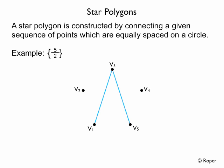Then we'll skip v1 and connect v5 to v2. Then we'll skip v3 and connect v2 to v4. Last, we'll skip v5 and connect v4 to v1. So now we have our star polygon with 5 equally spaced points on a circle with every second point connected.